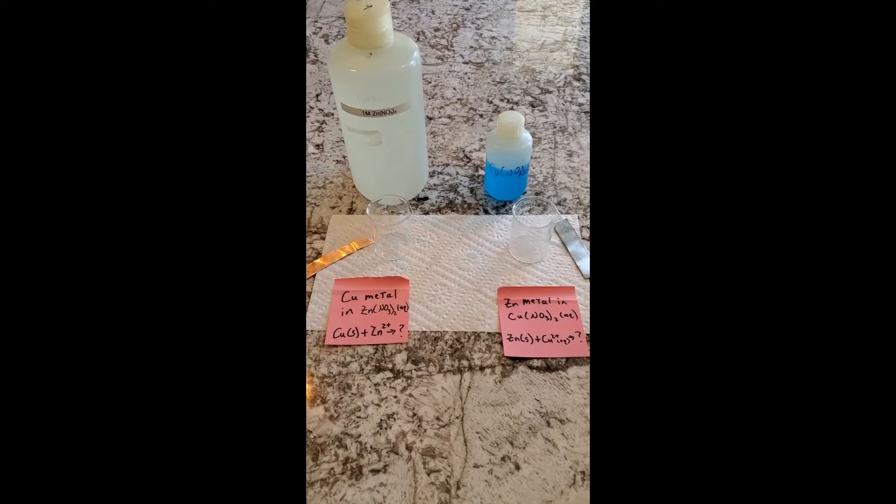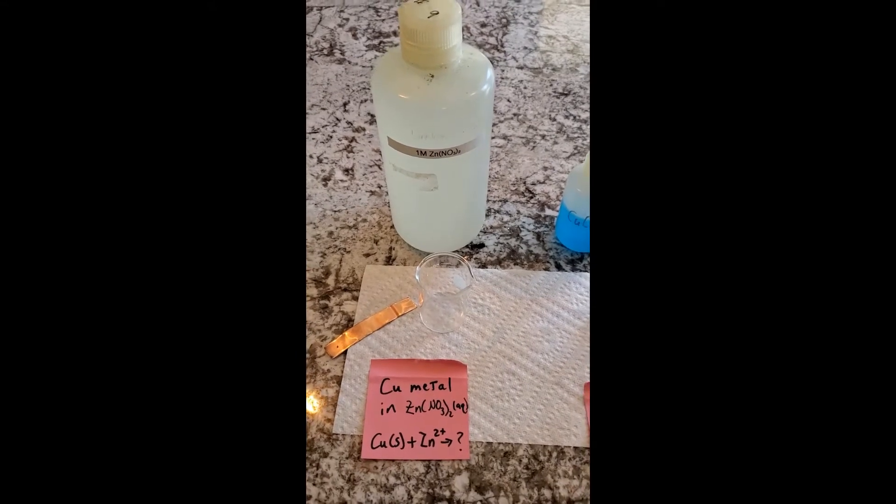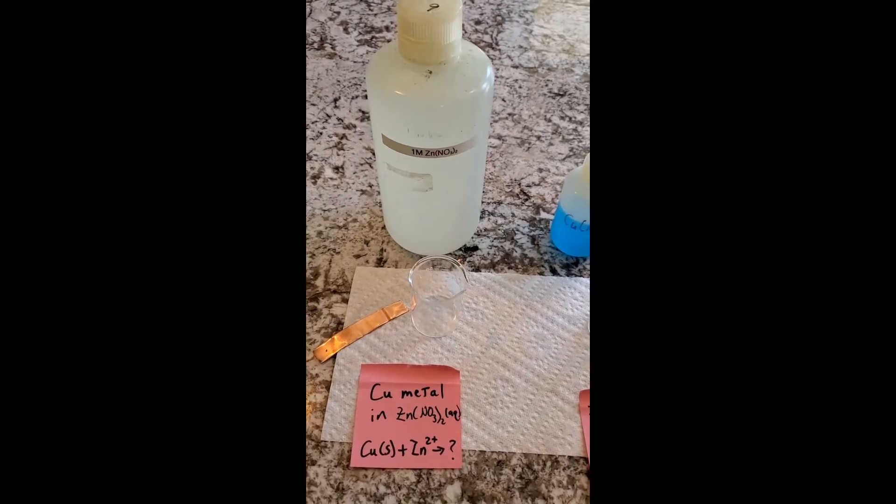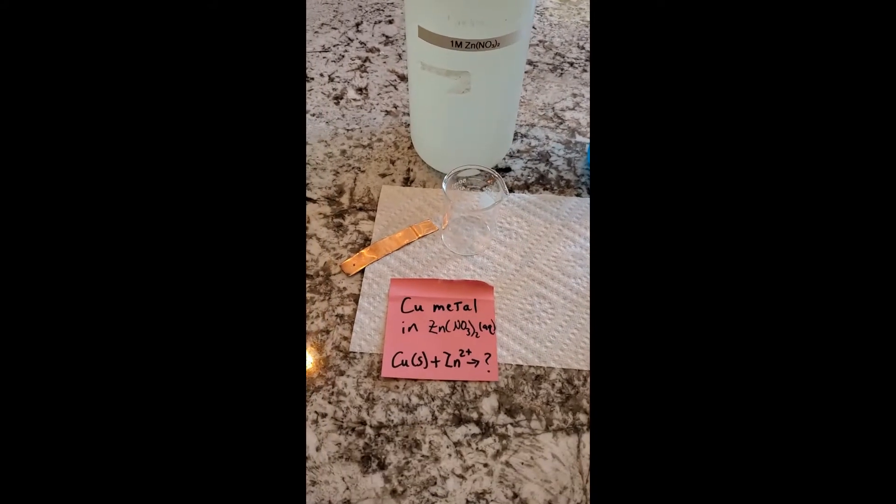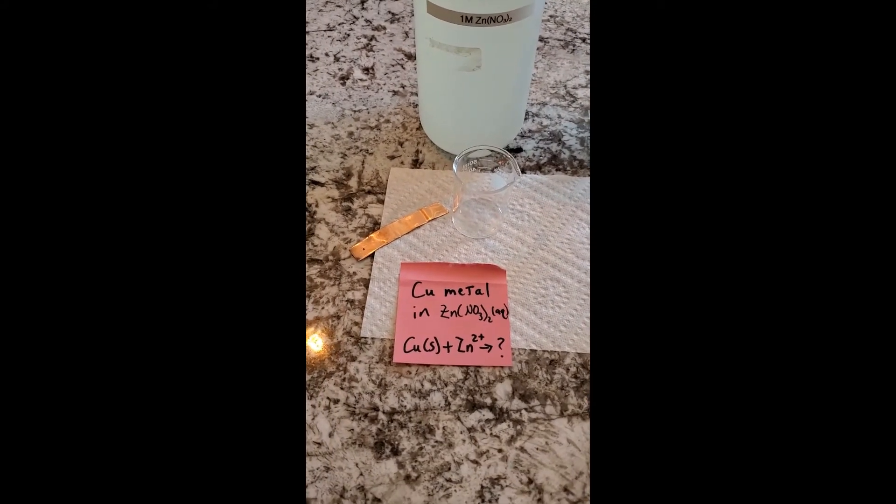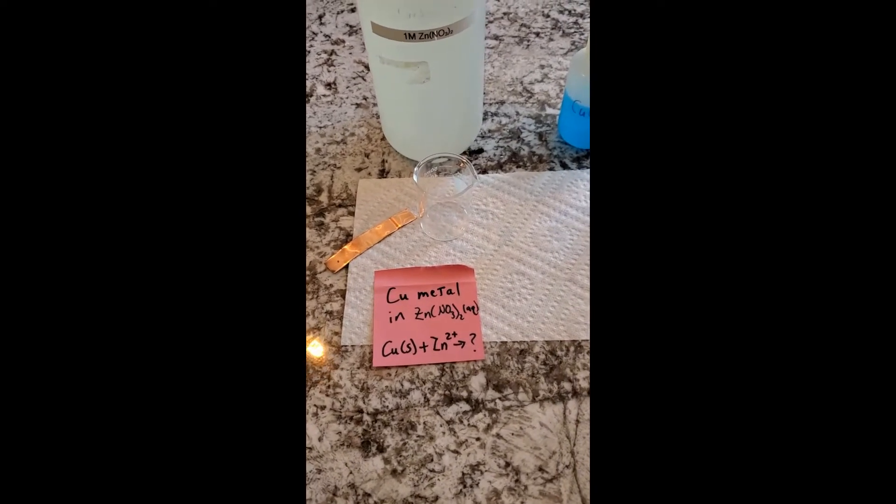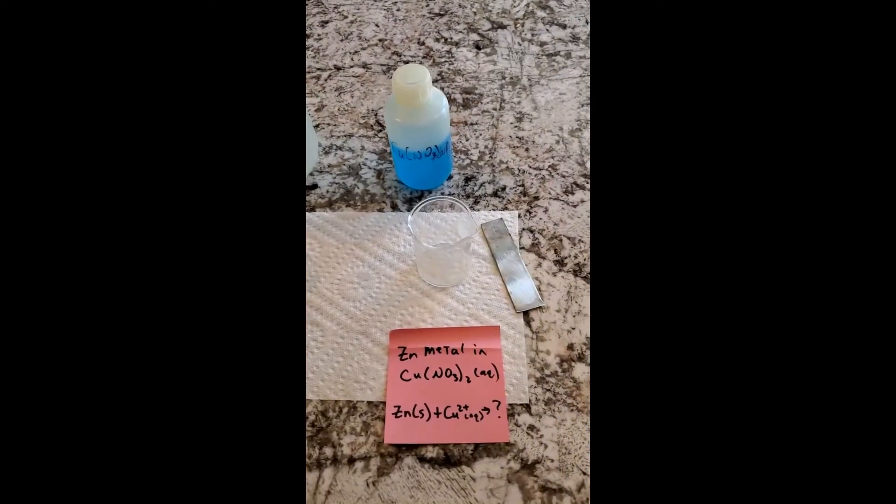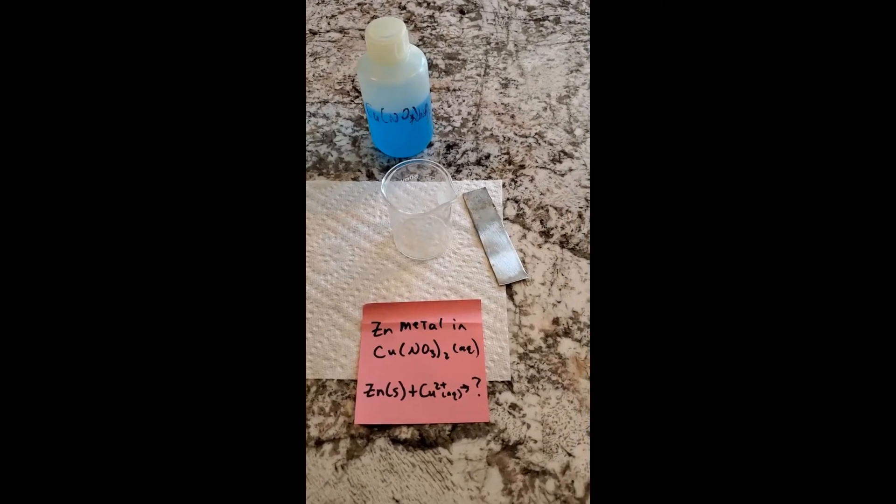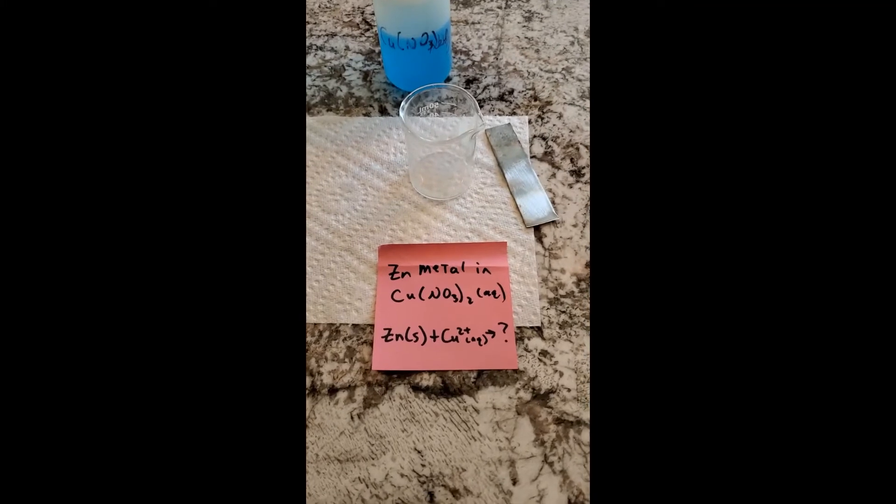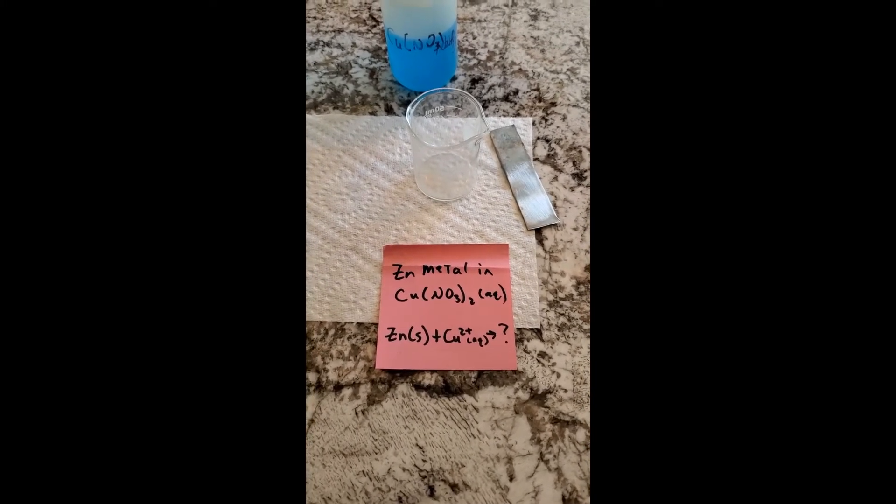For part A, I have a solution of zinc nitrate, which is essentially a solution of zinc two plus ions, and I have a copper metal strip. We're going to see what happens when I put the metal and the zinc ions together in the beaker. I also have copper two nitrate and a zinc metal strip, and we're going to see what happens when I put the zinc metal in the copper two plus ions that